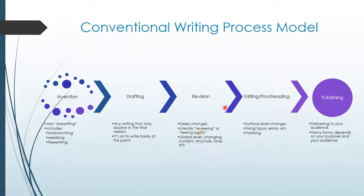From there you move into editing and proofreading, where you fix your typos and errors, make your sentence structure the way you want, and make the formatting correct. It's important to distinguish between revision and editing because you don't want to spend an hour fixing typos and then realize you don't need that section at all — that's never a good feeling. So those two stages typically do go in that order.